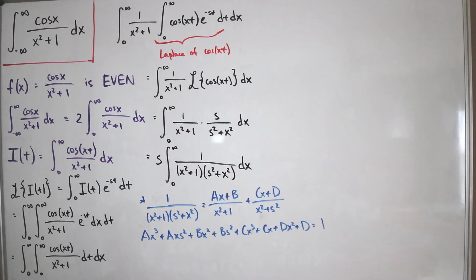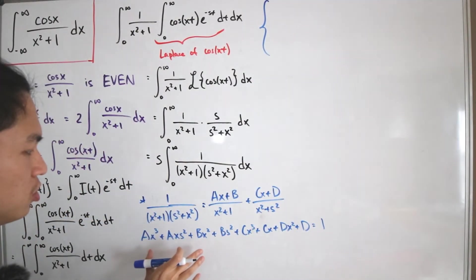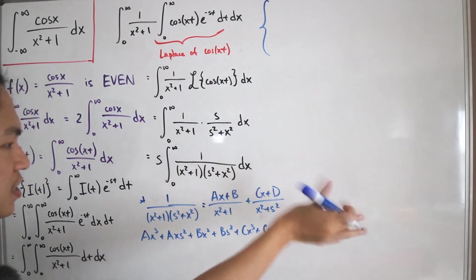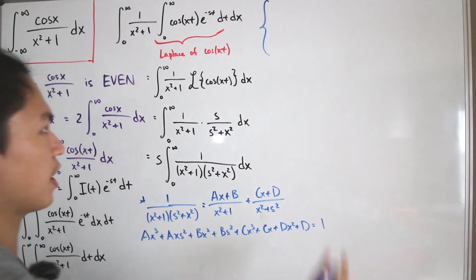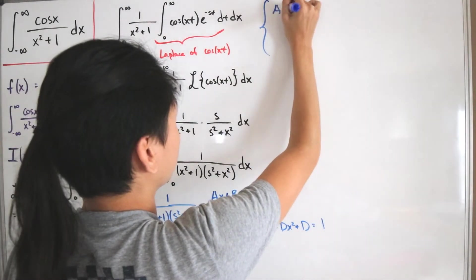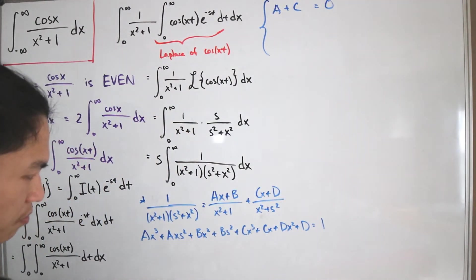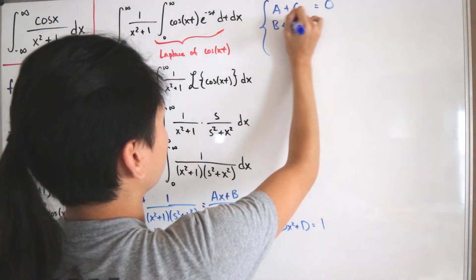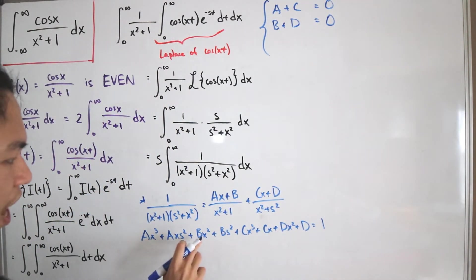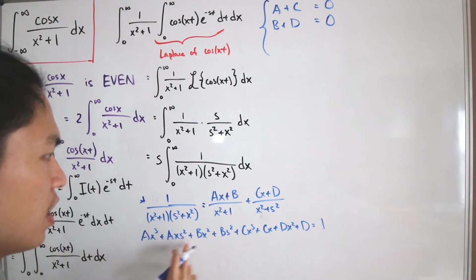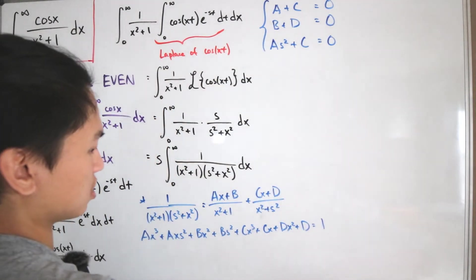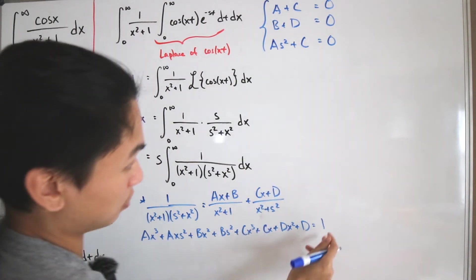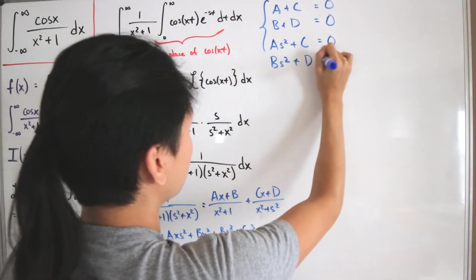We convert this into a system of equations by matching coefficients on both sides. For the cubic (x³) terms: a + c = 0. For the x² terms: b + d = 0. For the x terms: as² + c = 0. For the constant terms: bs² + d = 1.